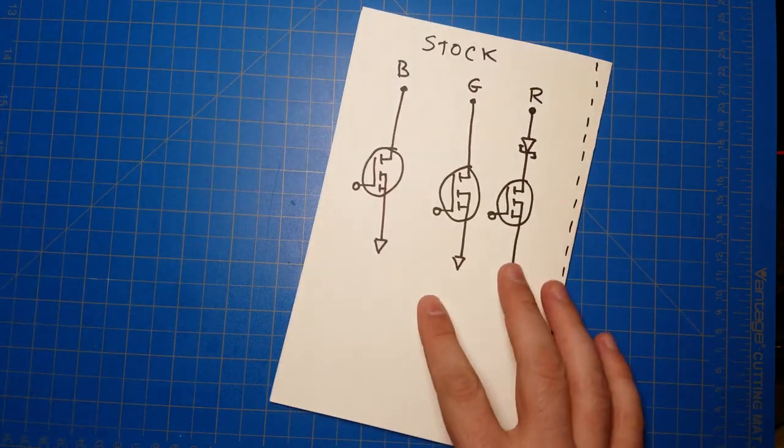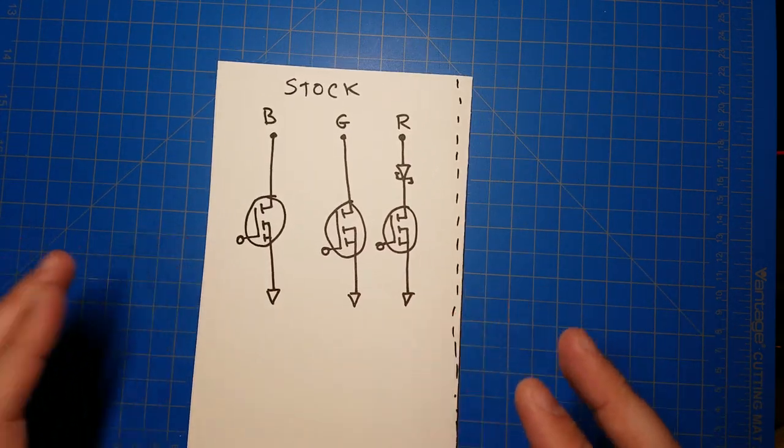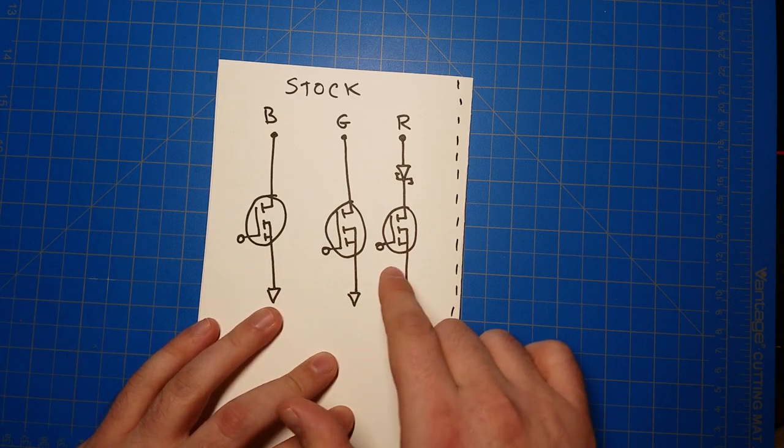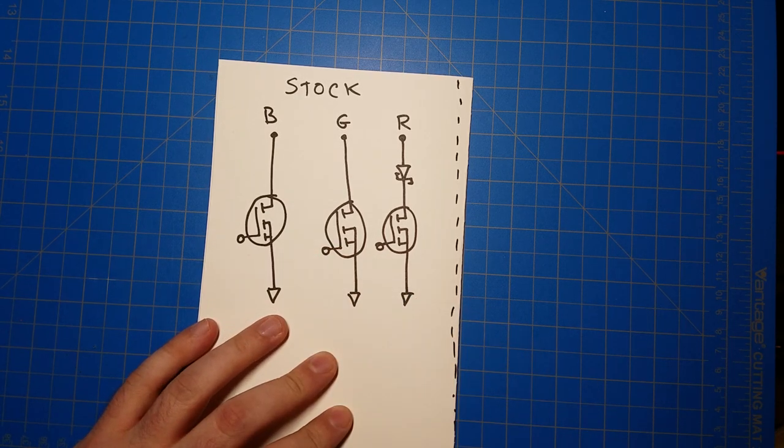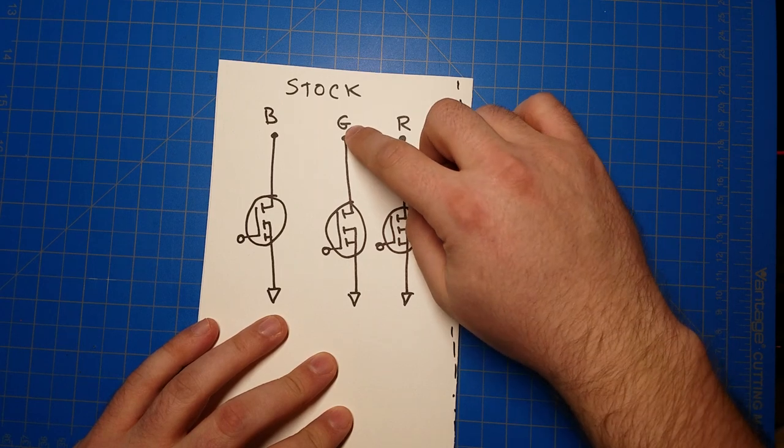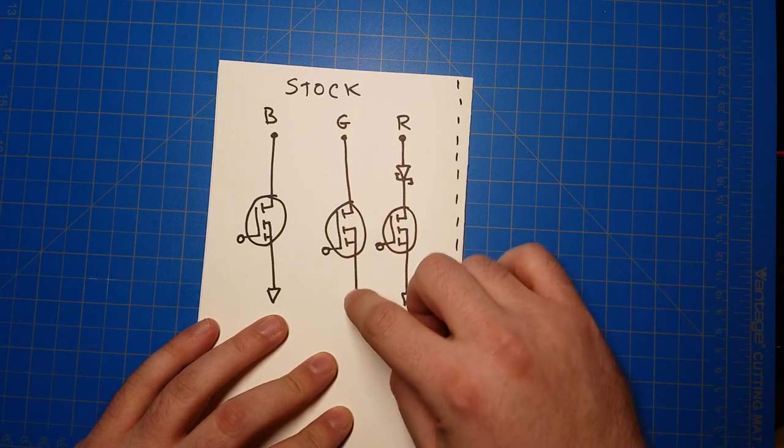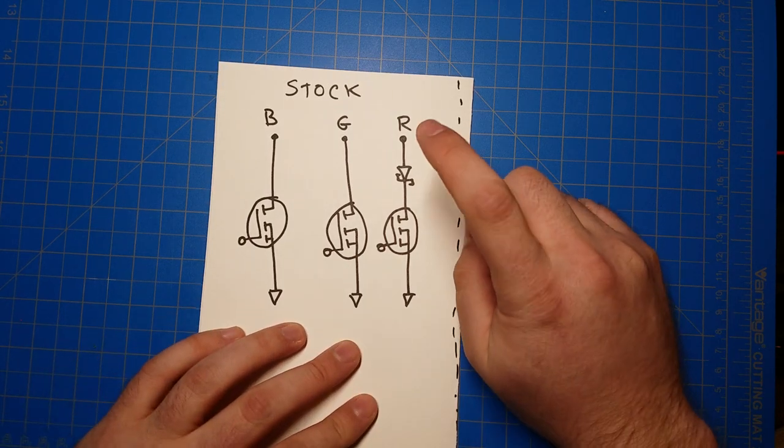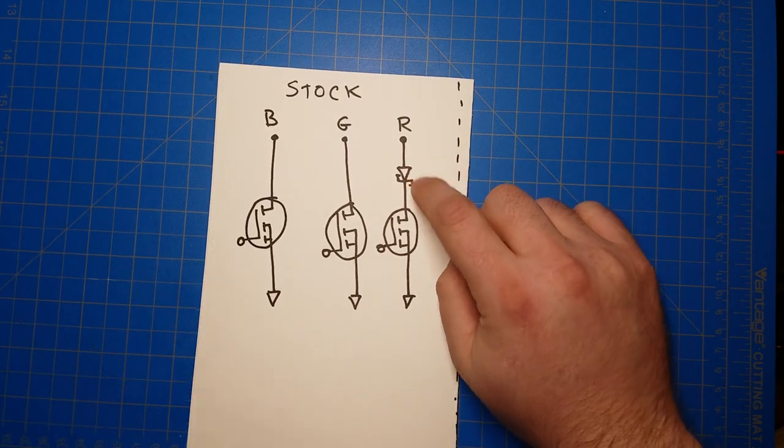So this little schematic here sort of shows off just that little bit. These are the MOSFETs. These little circles represent the pins that connect to the microcontroller to control the MOSFET. And you can see it's just the green line comes down through the MOSFET to ground. The blue line straight through the MOSFET to ground. Very simple. But this red channel has something odd about it.